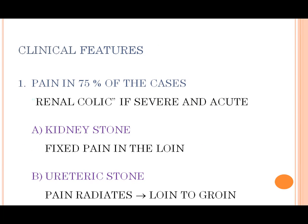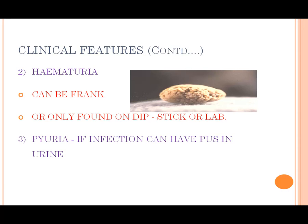Clinical features: kidney stones — over 75% present with renal colic, severe and acute. Kidney stones cause fixed pain. Uric acid clinical features include hematuria, meaning blood in urine, which can be visible or only found on dipstick or lab test. Pyuria — pus in urine — can occur with infection.